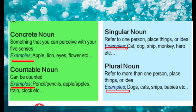Next, singular noun — referred to one person, place, thing, or idea. It refers to a single thing, person, or place. Examples: cat, dog, ship, monkey, hero, etc.